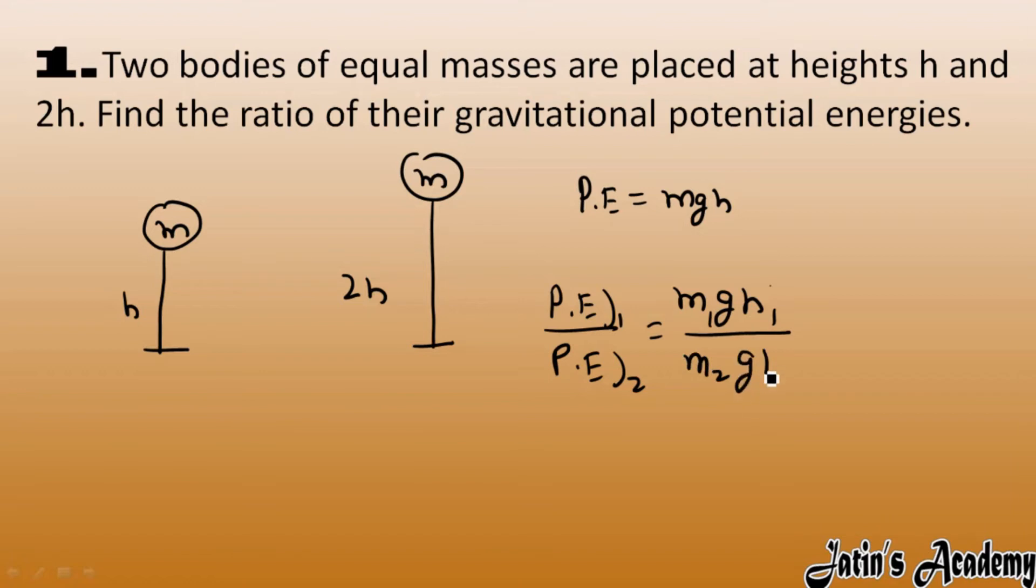g and g cancel out here. Mass is also same, so we can write m times h for the first case and m times 2h for the second case. Mass and mass cancel out, h and h cancel out.